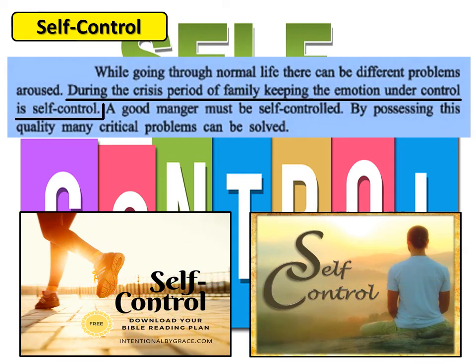The seventh quality is self-control. During normal life there can be different problems, and during the crisis period of a family, keeping emotions under control is self-control. A good home manager must be self-controlled — by possessing this quality, many critical problems can be solved. If the ability of self-control exists, it is easy to maintain good relations among family members. Sometimes misunderstandings happen among family members which hamper relationships; in this situation the home manager can control things by being self-controlled.